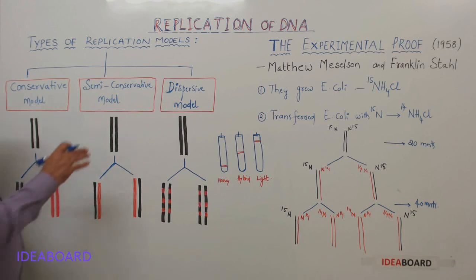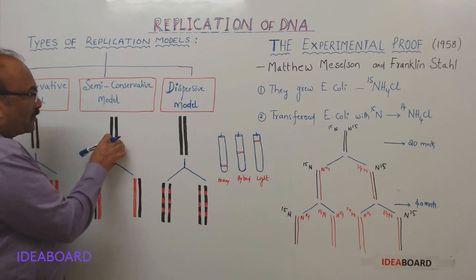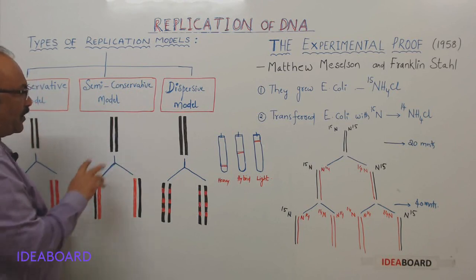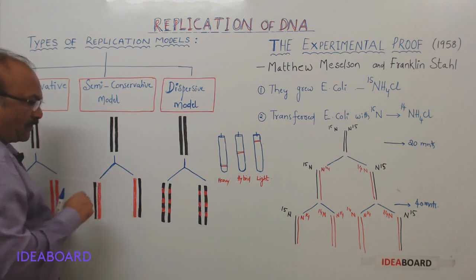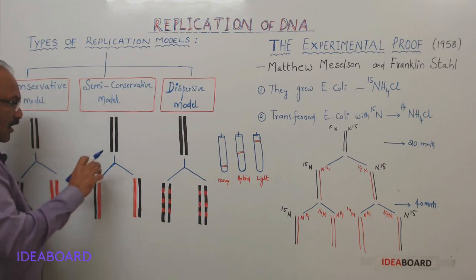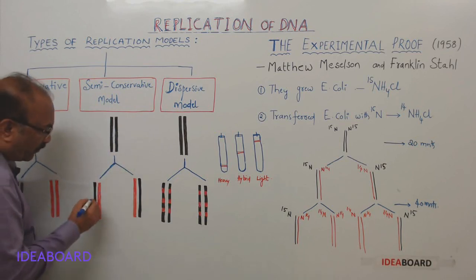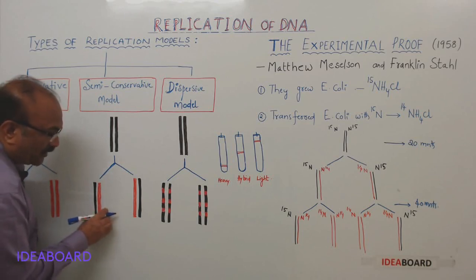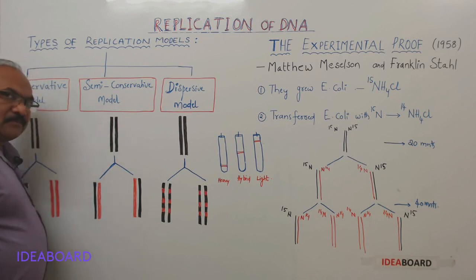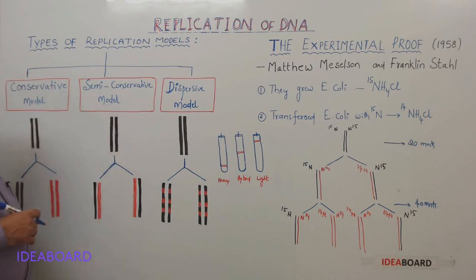Now let us look at the semi-conservative model. Here, this is the parent DNA shown in black. These two are daughter DNAs, and each daughter DNA is composed of one parental strand and one new strand. That is why this is called semi-conservative type of replication.